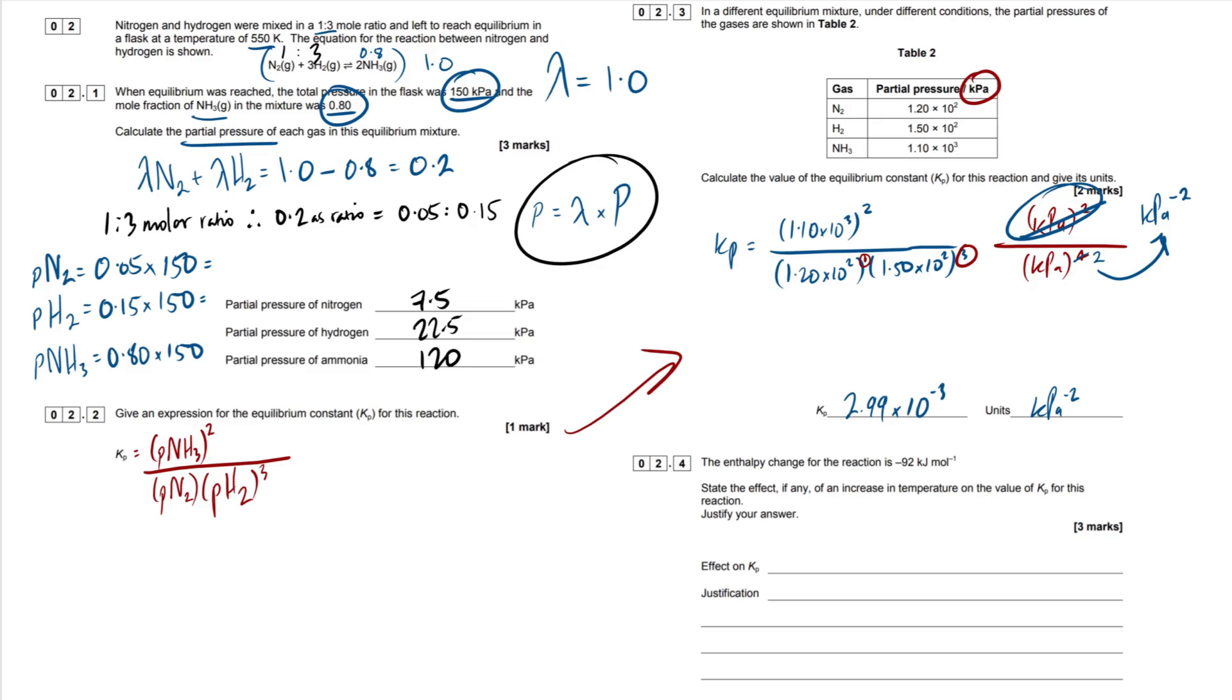Next question then. So enthalpy change. The enthalpy change for the reaction is minus 92 kilojoules per mole. State the effect, if any, of an increase in temperature on the value of KP for this reaction, and we have to justify our answer. So first thing you should be thinking is, okay, minus 92. This is obviously exothermic. And what happens when something's exothermic? We can say, therefore, surrounding temp increases. Now, all we have to do is think back to year one. Le Chatelier's principle, if a condition within a system at equilibrium is changed, the equilibrium will shift in order to oppose that change.